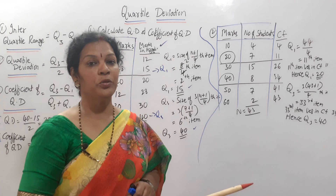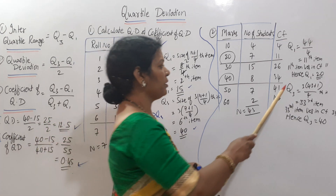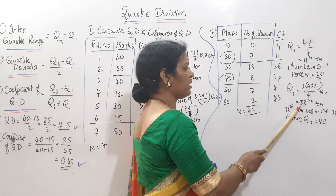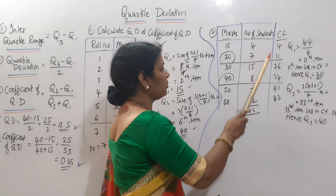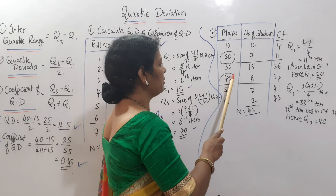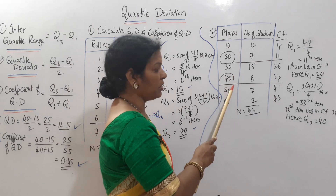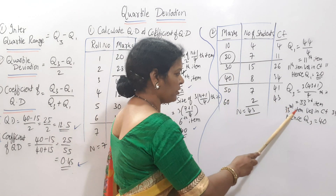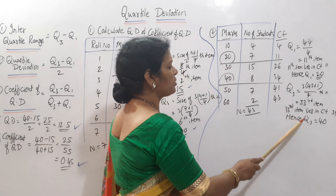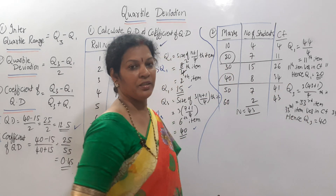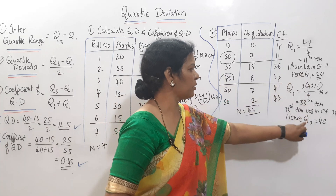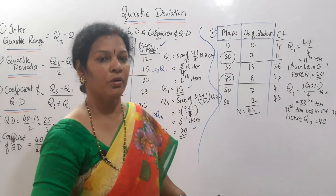For Q3, the formula is 3(N+1)/4th item = 3×(43+1)/4 = 132/4 = 33rd item. The 33rd item lies in the cumulative frequency corresponding to Q3 = 40. Hence Q3 is equal to 40. So Q1 = 20 and Q3 = 40.